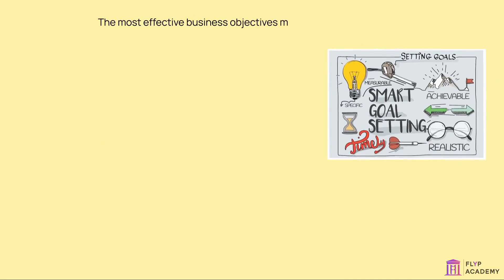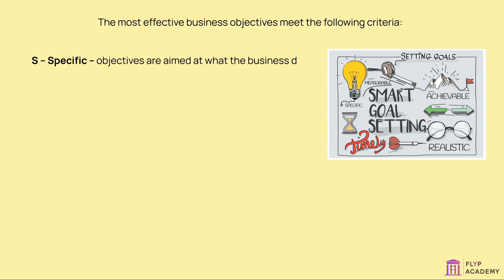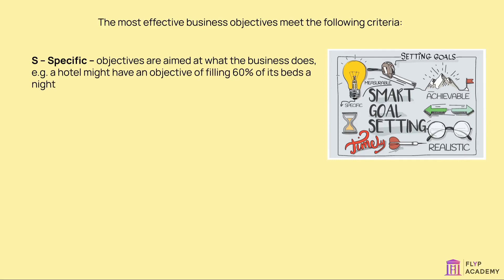The most effective business objectives meet the SMART criteria. S — Specific: objectives are aimed at what the business does. For example, a hotel might have an objective of filling 60% of its beds a night during October — an objective specific to that business.